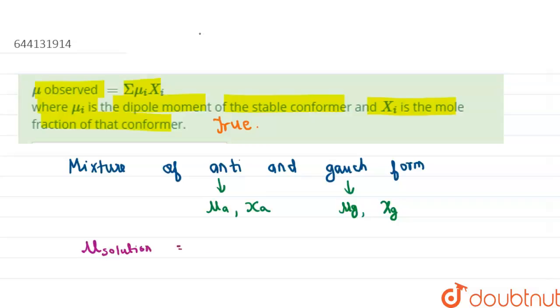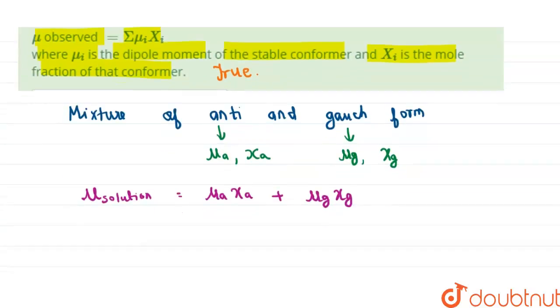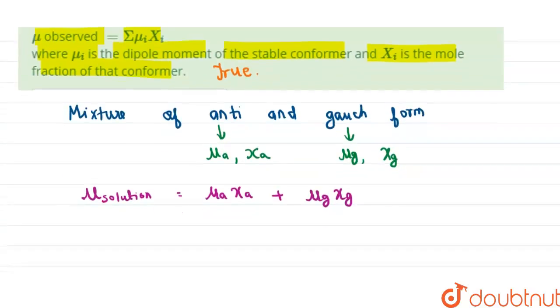as μₐ × xₐ + μ_g × x_g. We also know that the mixture contains only anti and gauche forms, so our next equation is xₐ + x_g = 1.